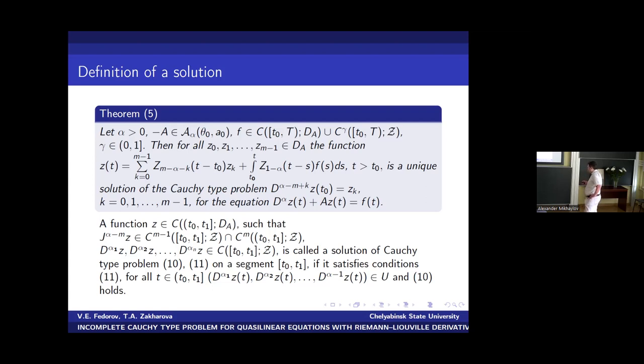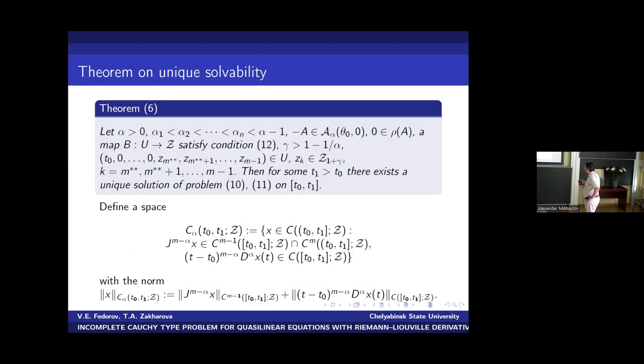Here we have definition of the solution for our main problem. Briefly, it is classical solution. All the functions and derivatives in our equation must be continuous by this definition. And it is the main theorem, theorem on unique solvability of our incomplete Cauchy type problem for nonlinear equation.